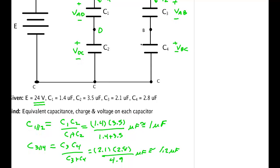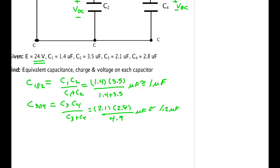So we have a circuit that can be replaced where these two capacitors are replaced by single capacitors. At 24 volts between A and C, I have a 1 microfarad capacitor and a 1.2 microfarad capacitor.